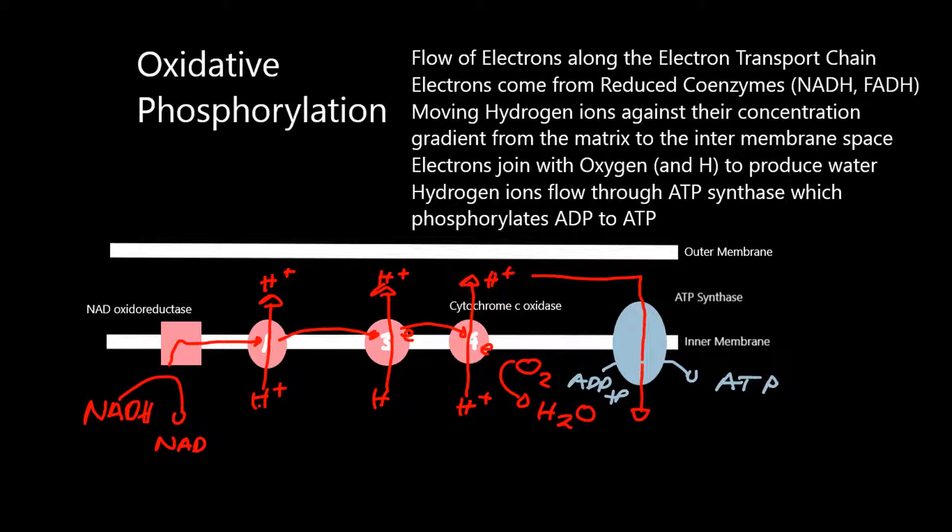The additional substance I haven't mentioned is FAD. FAD delivers its electrons at complex 2, and complex 2 is between complex 1 and complex 3. The FADH has less energy, so FAD pushes less protons through the membrane.